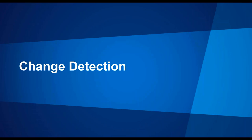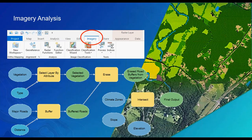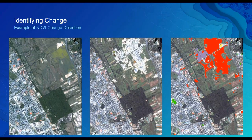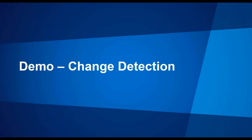Now let's look at the first use case: identifying buildings using imagery. ArcGIS Pro provides imagery analyst tools with the ability to sequence tools in tasks and models, often used to create automated workflows for change detection. In this example, we see change detection using NDVI — normalized difference vegetation index — to determine areas of change from vegetation on the left image to a built environment in the center, with areas of change detected indicated in red on the right.